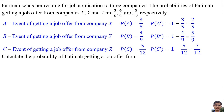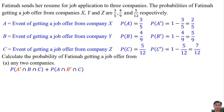Calculate the probability of Ultima getting a job offer from exactly any two companies. There are three possibilities: she may not get an offer from company X but get offers from companies Y and Z; or she may not get an offer from company Y but get offers from companies X and Z; or she may not get an offer from company Z but get offers from companies X and Y.